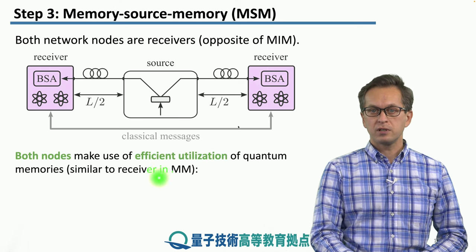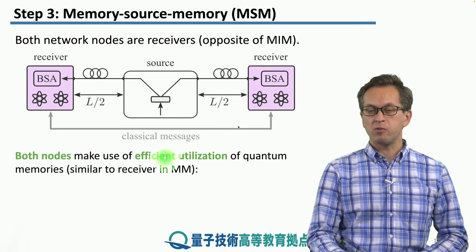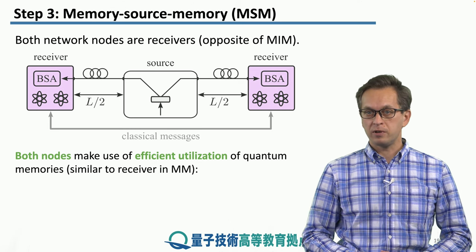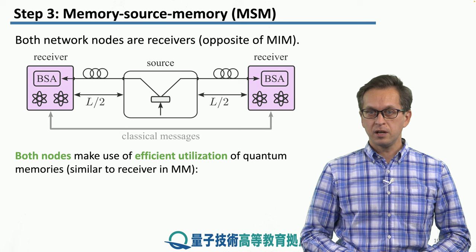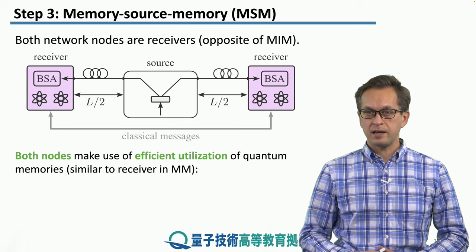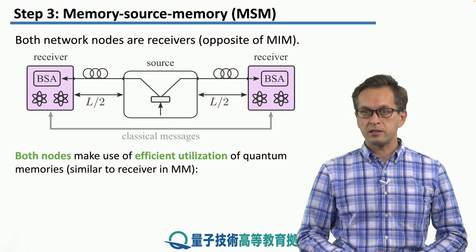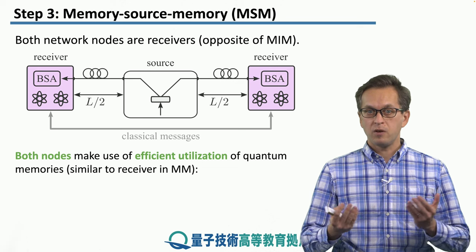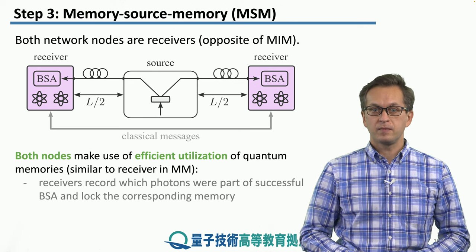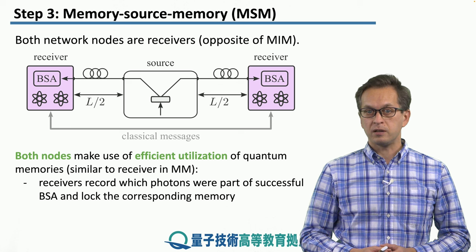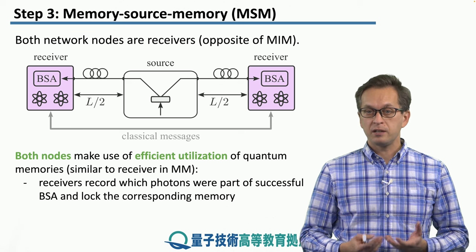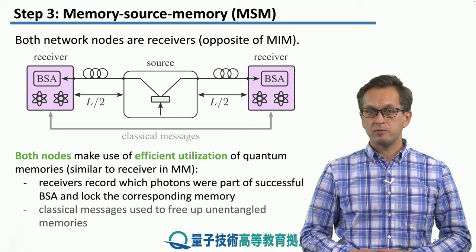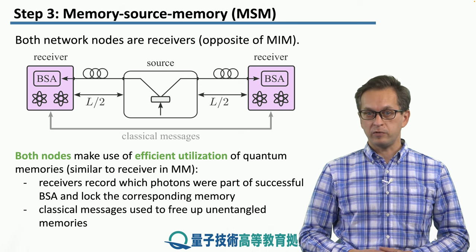Now both nodes can make efficient use of their quantum memories. We saw in the previous step, in the case of the Memory-Memory or MM link architecture, that placing the BSA inside the repeater gains us quite nice advantages. So this way we can place it in both. Both of the repeater nodes are receivers, therefore they can make very fast decisions about what to do with their memories, and this way we minimize the lock time of these memories.